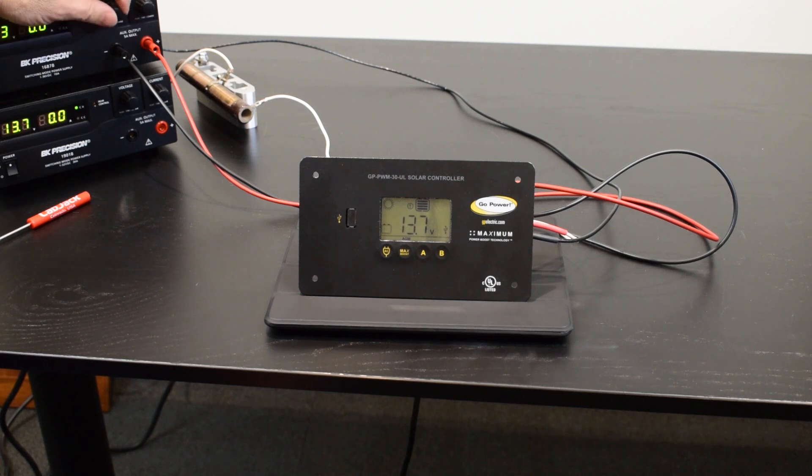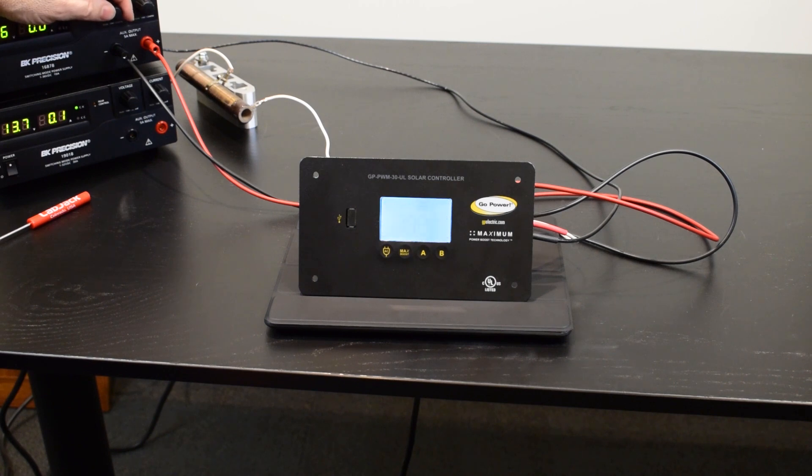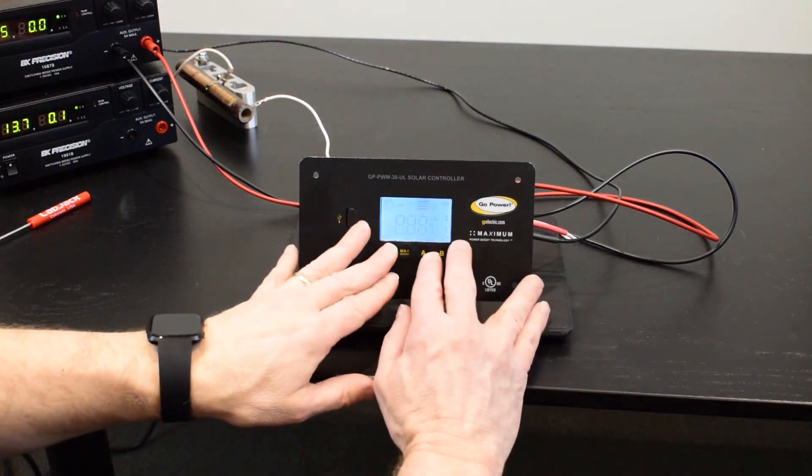You can also, once it's flashing, try what's called a soft reset on the controller. If it's flashing and you get your voltage down again below the 15.5 volt rate and you're able to hold